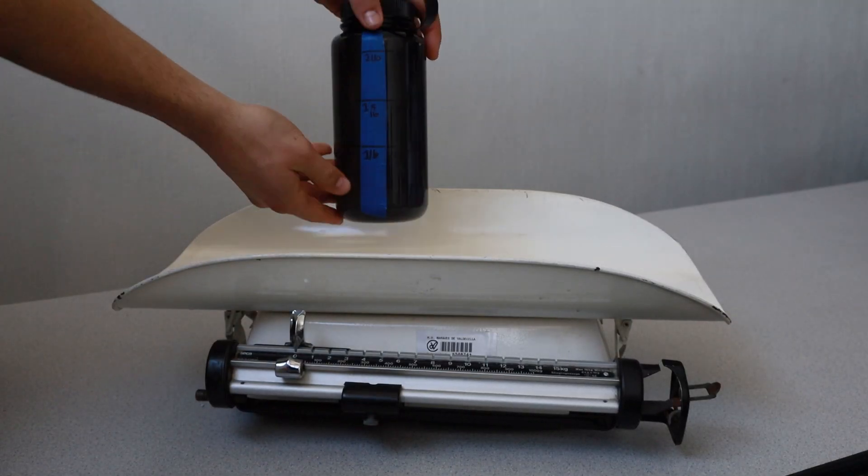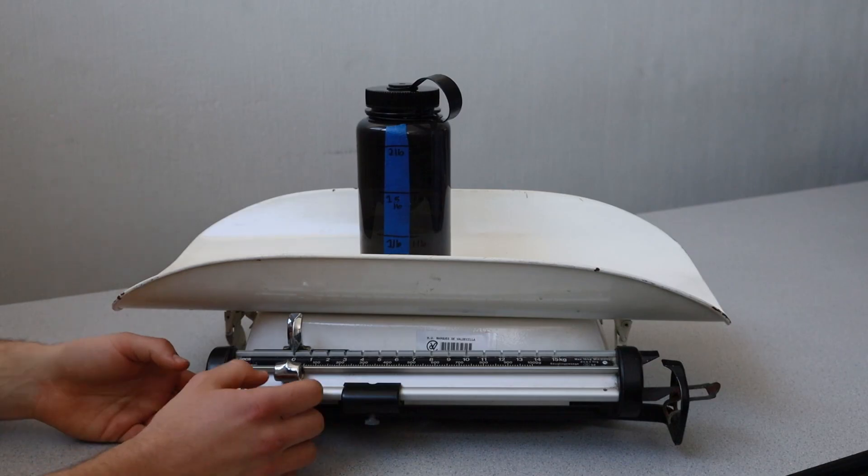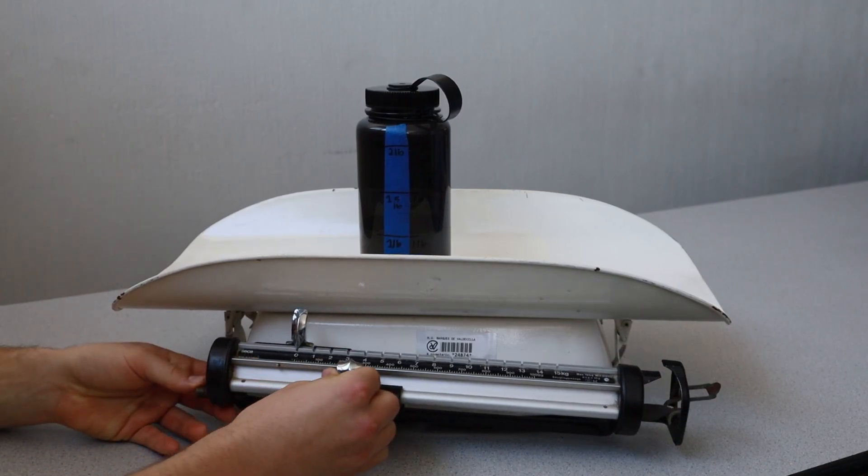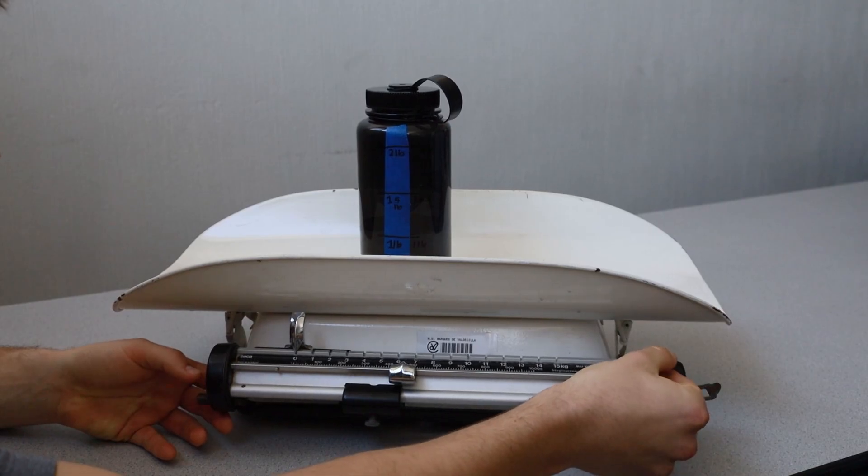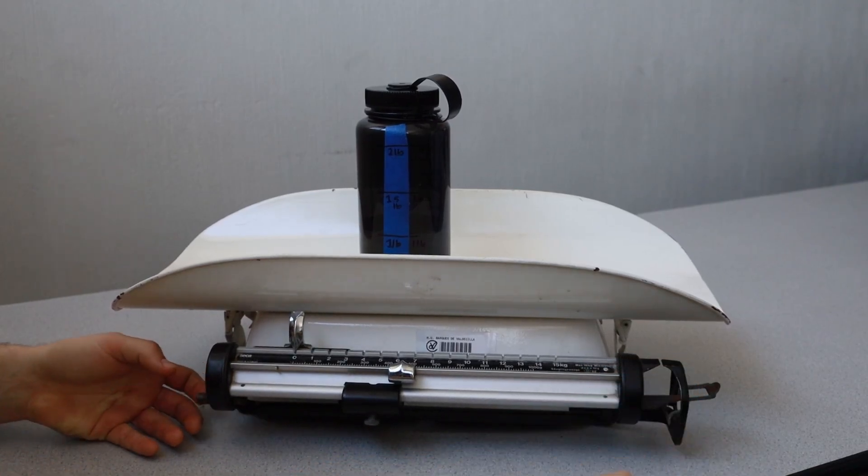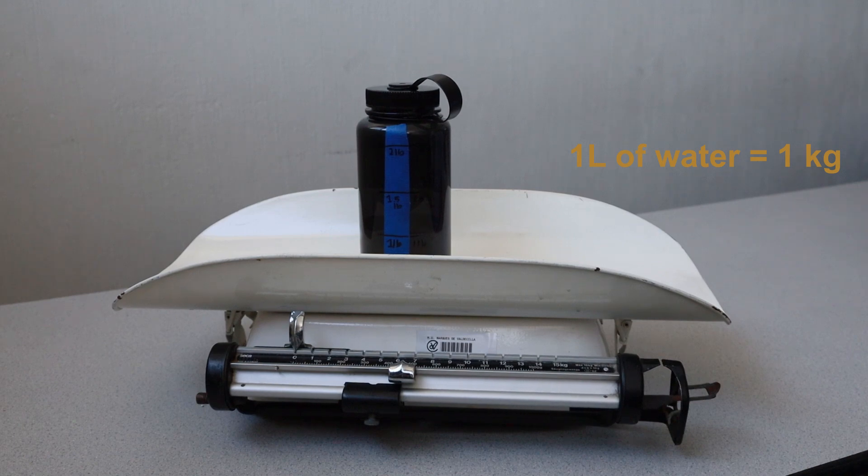To double check that the scale is calibrated, a known mass can be placed in the weighing basket and weighed using the previously described procedure. A bottle of room temperature water can be used as a known weight if no known weights are available. If available, fill a small container of water with 3 or 4 liters and place it on the infant scale. 3 liters of water should weigh approximately 3 kilograms. 4 liters of water should weigh 4 kilograms.